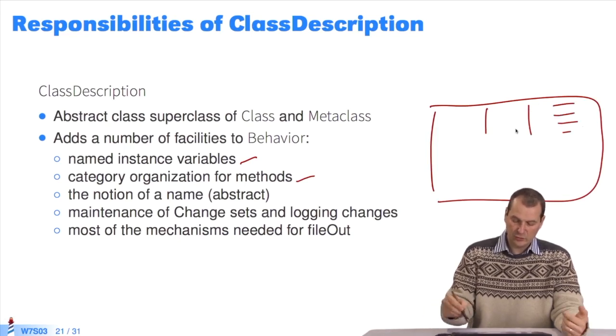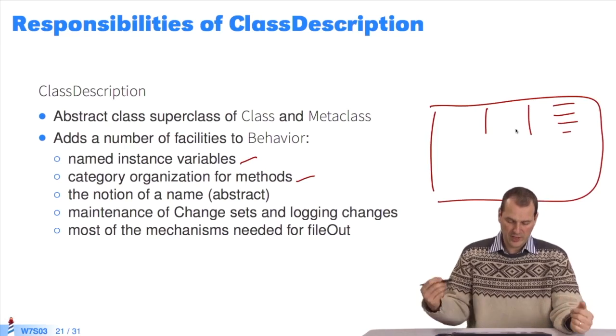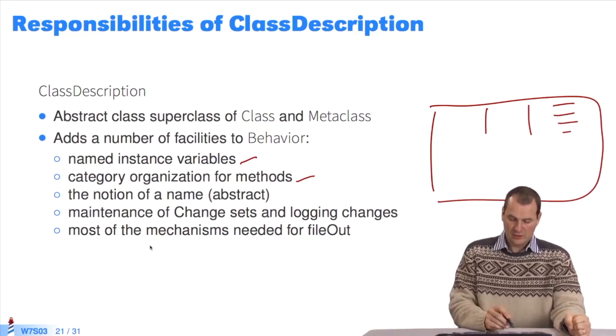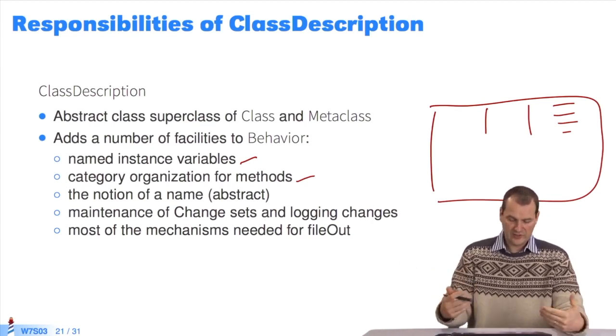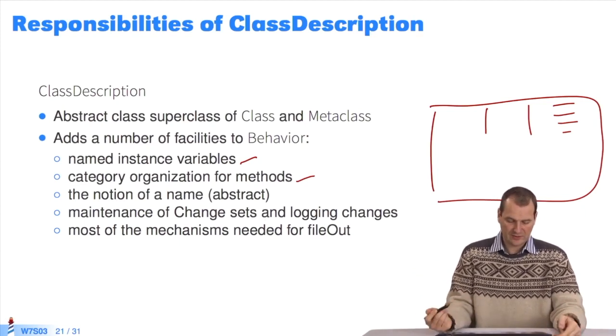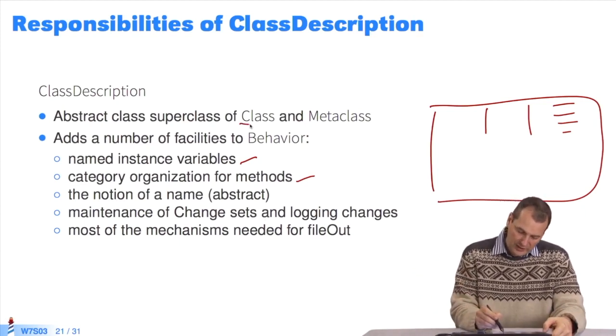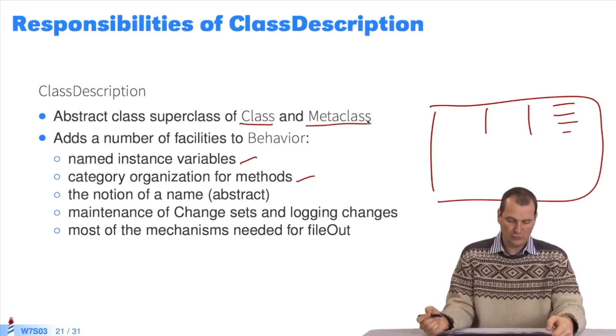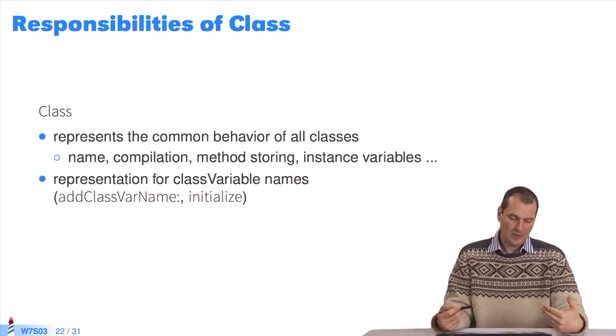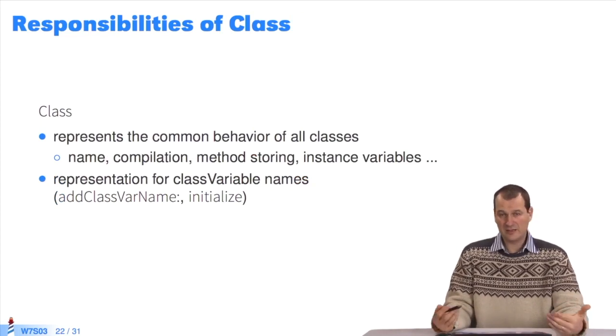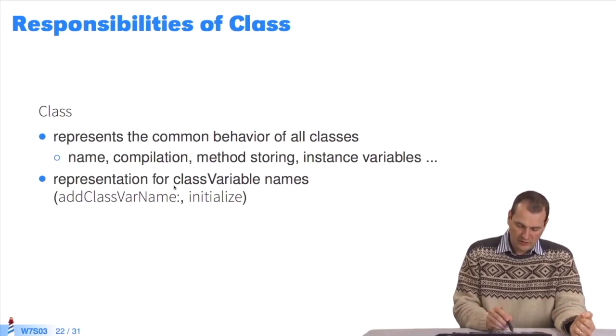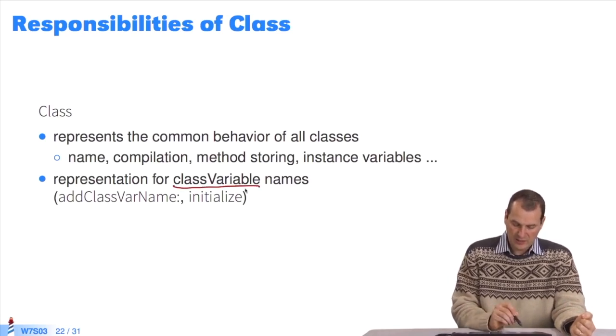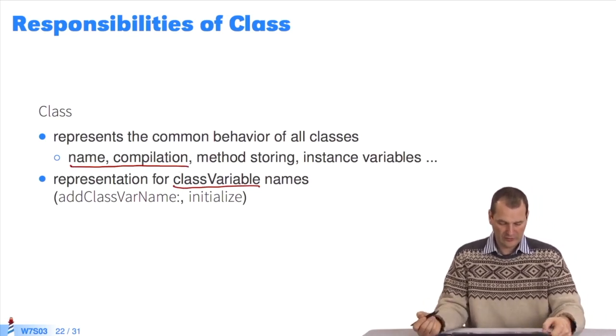Category organization concerns methods in your browser showing the protocols. For example, a method can be stored in the printing protocol. Also, the notion of a name, plus the maintenance of change sets and the saving of changes in files. You can look at that yourself. This categorization exists because use is shared by class and metaclass. Once again, refer to the code.